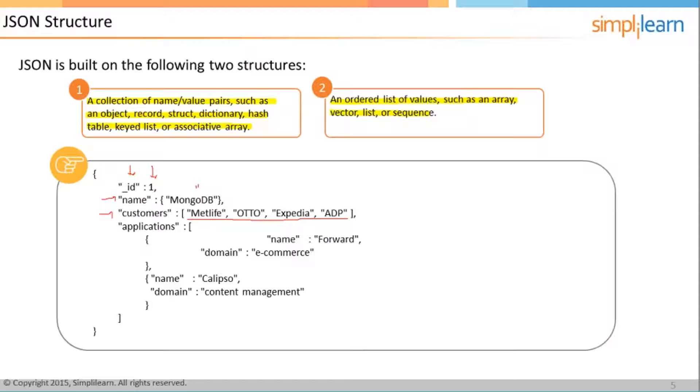Then over here please see what we have is applications which is a key having an array which again has two documents, very important over here. Applications internally has two documents - one document is name is Forward, domain is e-commerce, and one document is name is Calypso, domain is content management.